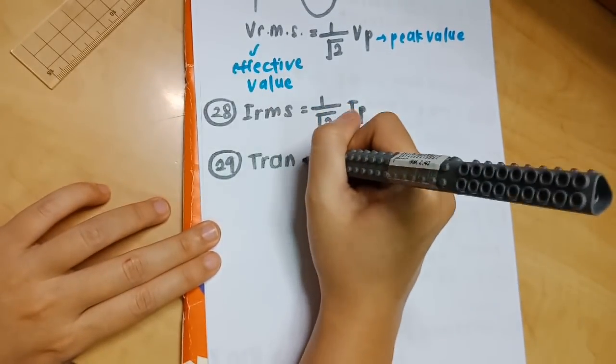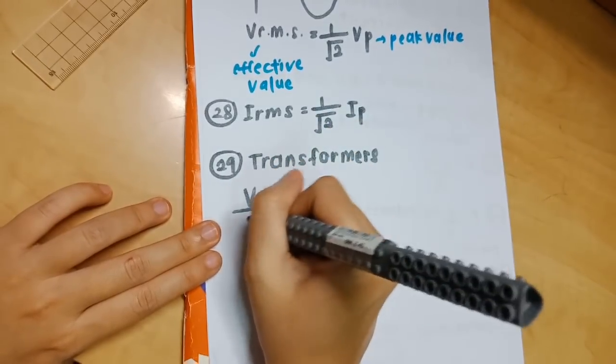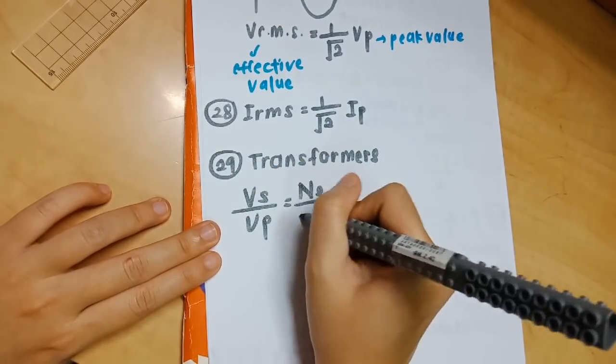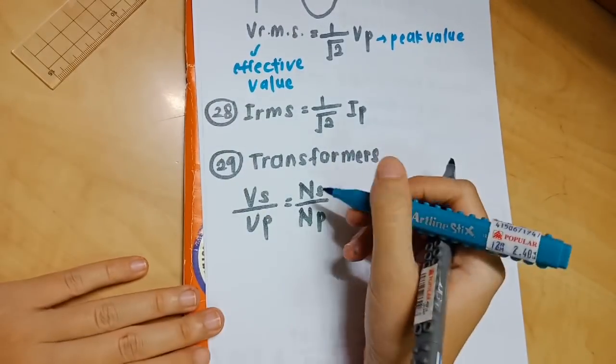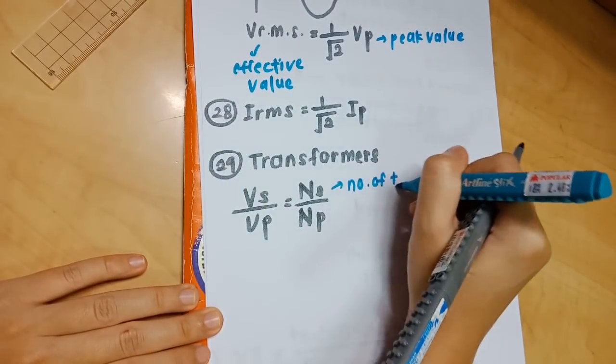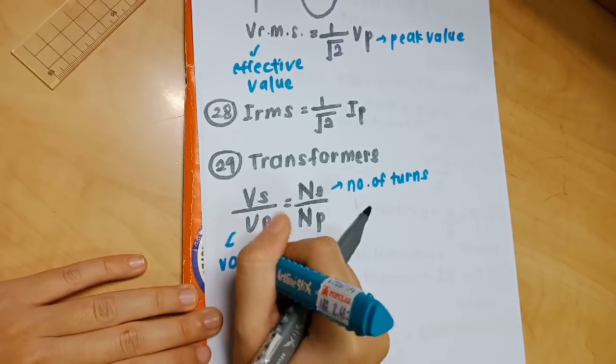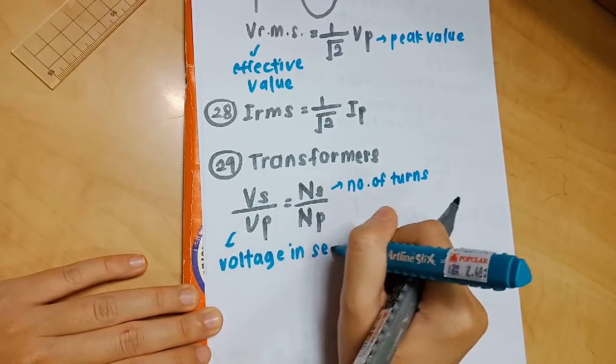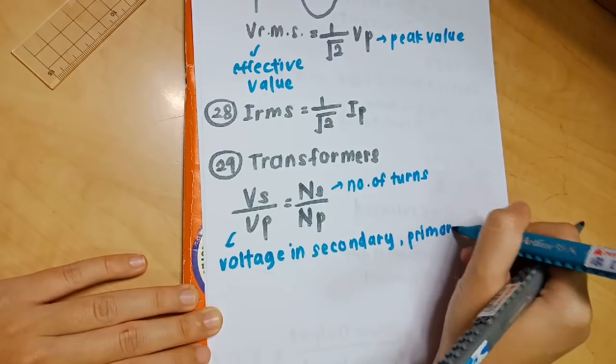Number 29 is on transformers. VS over VP equals NS over NP. VS refers to voltage in the secondary coil, and it goes the same for VP. NS refers to the number of turns in the secondary and primary coils.